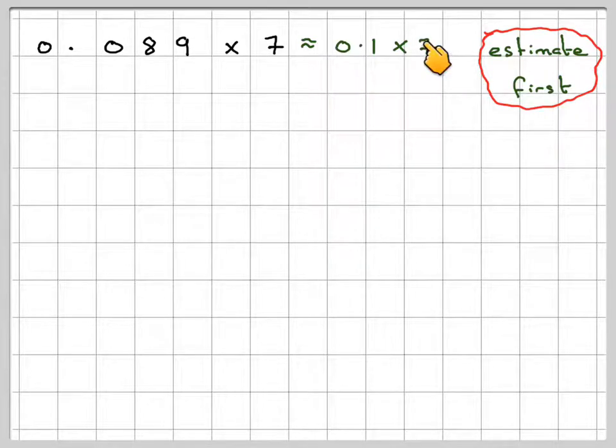which you know, you move the decimal point one place that way. So that will make it 0.7. So this should be roughly near 0.7.